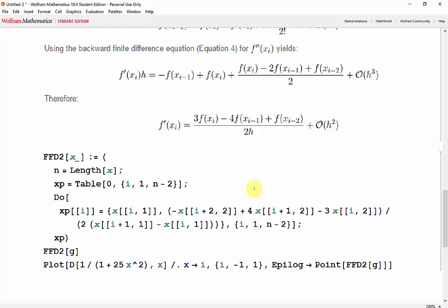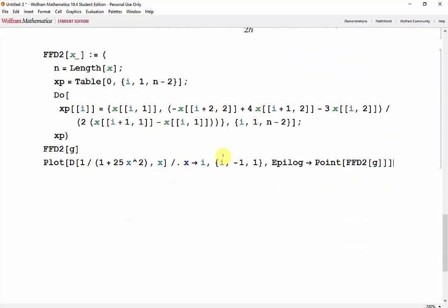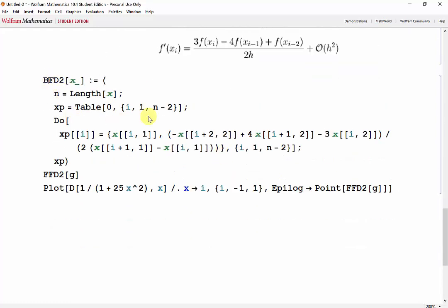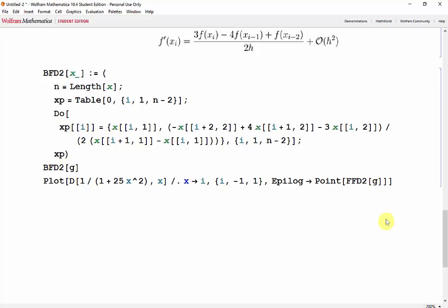Now copying and pasting. We'll change these to BFD2. And the length of our vector will be n minus 2 again, because the derivative can only be found starting from the third data point.